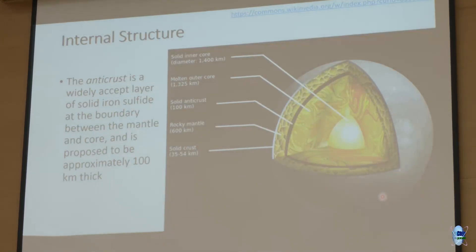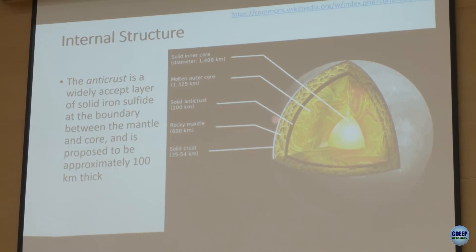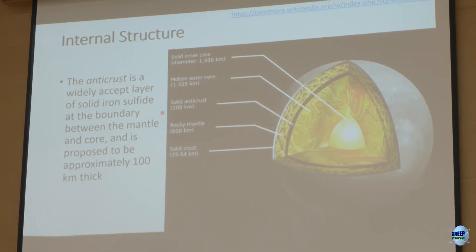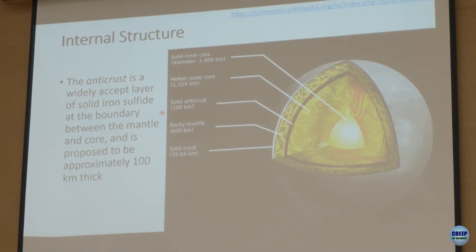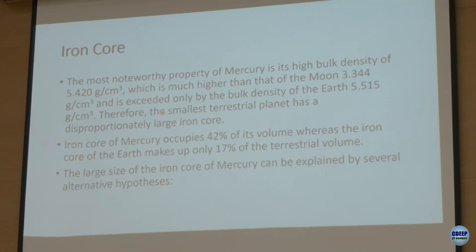Mercury has a very unique internal structure. From outside inward: crust, rocky mantle, then a layer called the anti-crust — solid iron sulfide at the boundary between mantle and core — then an outer liquid core, and a solid inner core, similar to Earth's layered structure. The anti-crust is neither mantle nor core material but iron sulfide, unique to Mercury and not found in any other planet.